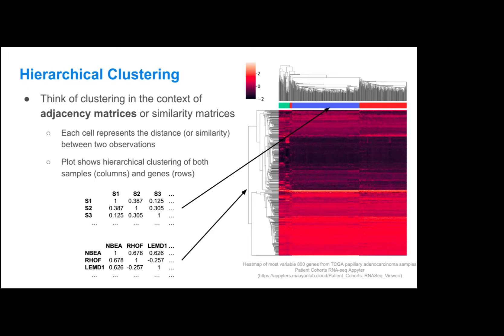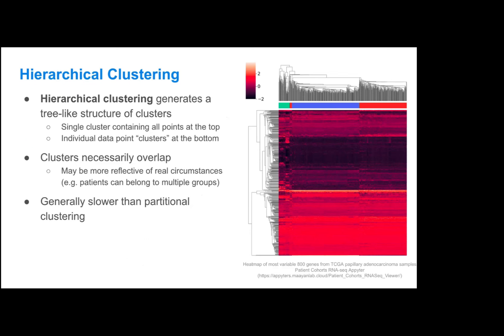And then down the rows, this plot also happens to show the hierarchical clustering of the genes. So essentially, the rows were clustered based on the similarity of each gene to all the other genes that were measured in each sample. Because it generates a tree-like structure of clusters, you have a single cluster that contains all points at the top, and then you have individual data point clusters at the bottom. You can see that structure with these lines, and that is just a dendrogram, which some of you have probably seen before.